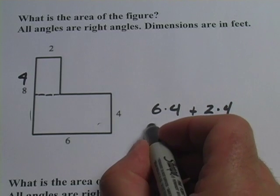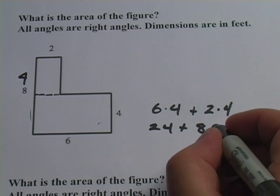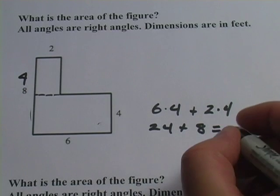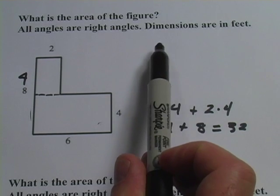So six times four is twenty-four plus two times four, that's eight. So the area there is going to be thirty-two and then we have to get the dimensions right, the units right.